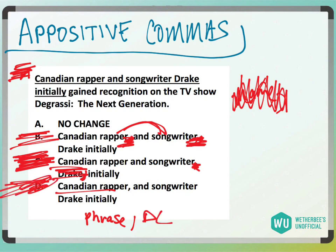Answer choice A: 'Canadian rapper and songwriter Drake initially gained recognition on the TV show Degrassi.' Since I can't put that name in a set of commas, it's basically 'Canadian rapper and songwriter Drake' — he initially gained recognition on the TV show Degrassi. I don't need commas around his name. I can't pull his name out of the sentence, and so we'll be left with answer choice A.